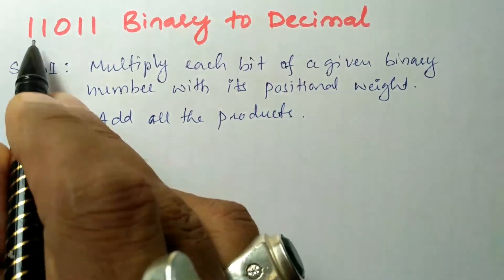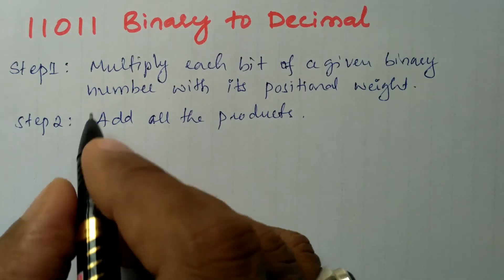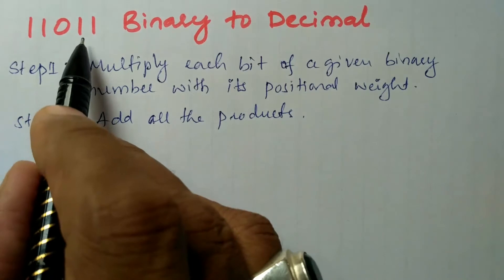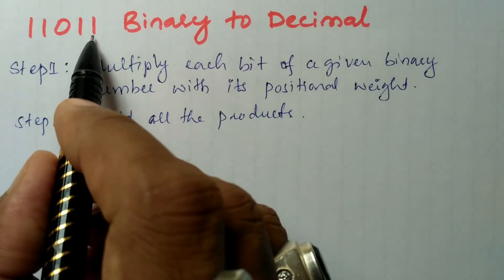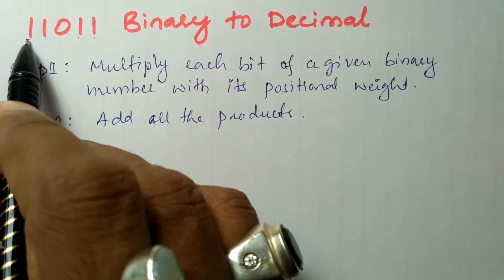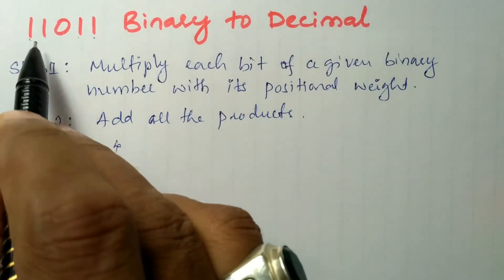Now let us consider this given binary number. I am going to multiply each bit with its positional weight. Start counting from the right-hand side. The positional weight of this bit is 0, 1, 2, 3, 4. Here I will write 1×2^4. Next bit is 1×2^3.